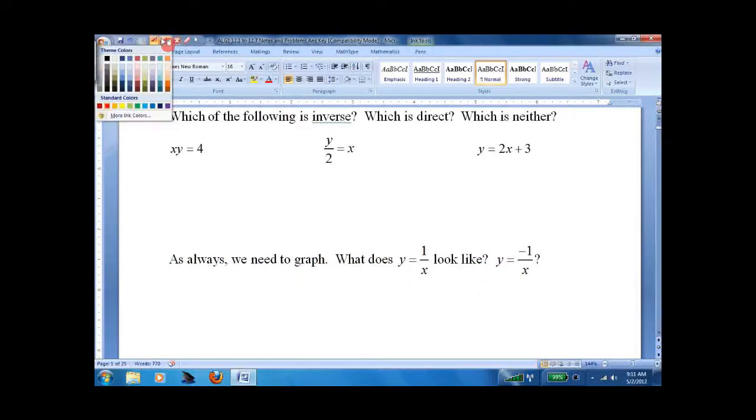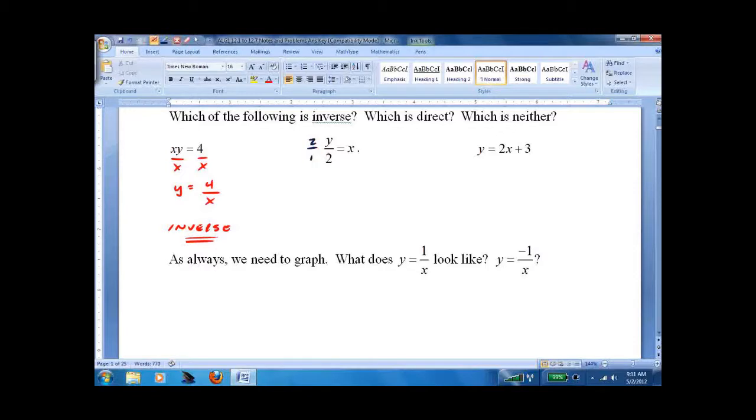Well, solve for y. Y equals 4 over x. That's Inverse. y over 2 equals x. Let's get y alone. Multiply by 2. Multiply by 2. They cancel. Y equals 2x.